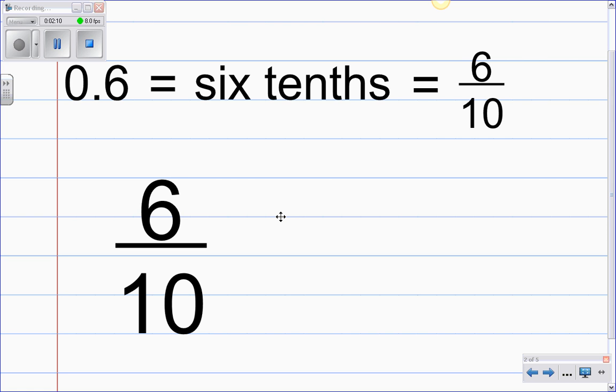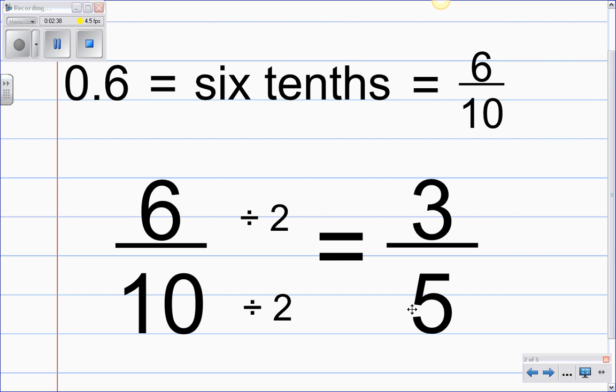Now we know we have the factors of 1, 2, 3, and 6 for 6. So of the numbers 1, 2, 3, and 6 what can we also divide into 10 besides the number 1? And that would be 2. So we should divide by 2 on both top and bottom. And when we reduce that we have 6 divided by 2 is 3 and 10 divided by 2 is 5.